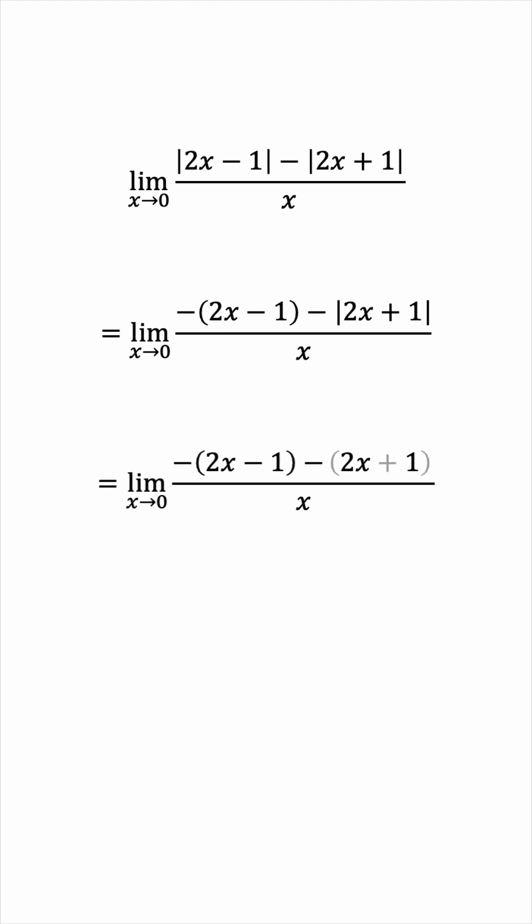We'll expand the two pairs of brackets, and the plus 1 and negative 1 will cancel, giving us negative 4x over x, which of course is just negative 4.